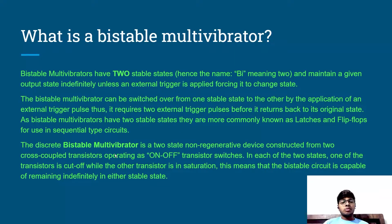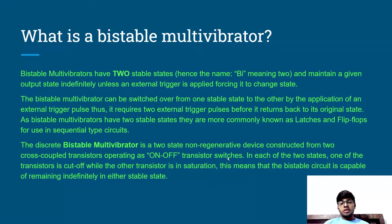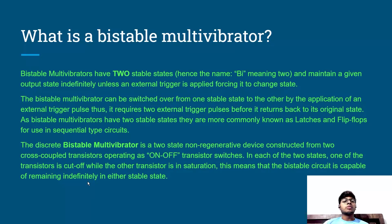The discrete bistable multivibrator is a two-state non-regenerative device constructed from two cross-coupled transistors operating as on-off switches. In each of the two states, one transistor is cut off while the other is in saturation. This means the bistable circuit is capable of remaining indefinitely in either stable state.